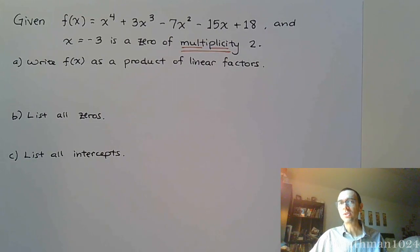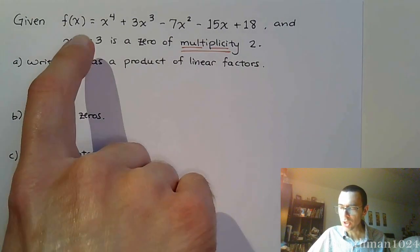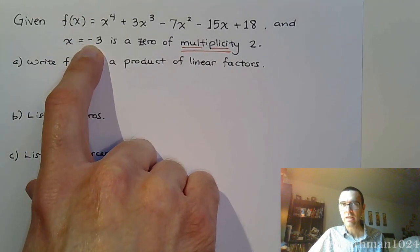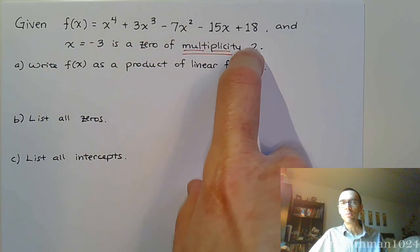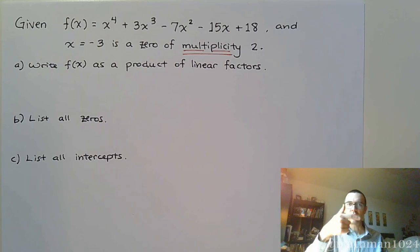What it means is that when we do synthetic division, we can do it with this value of k as many times as we have that multiplicity. So if it were a multiplicity of three, we could do synthetic division once, twice, three times. But here, we're only going to do it two.